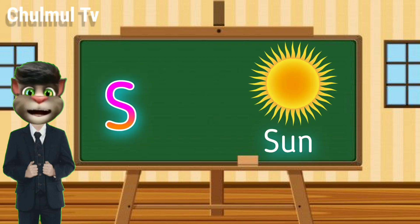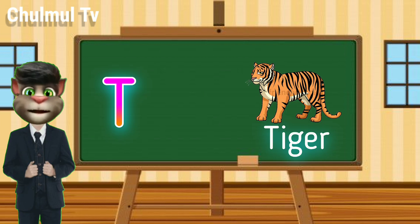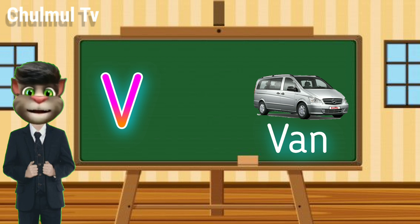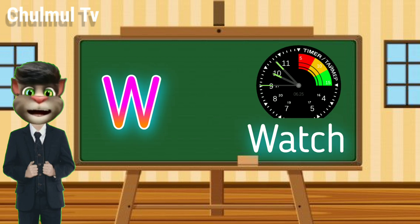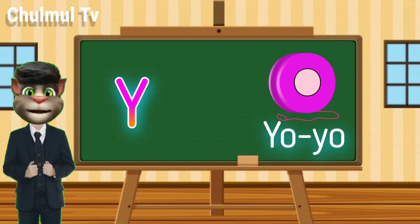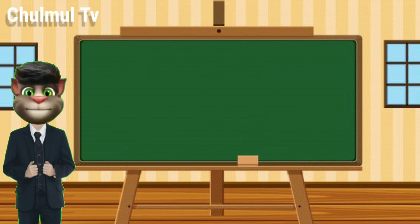S for sun, D for tiger, U for umbrella, V for van, W for watch, X for X-ray, Y for Yoyo.